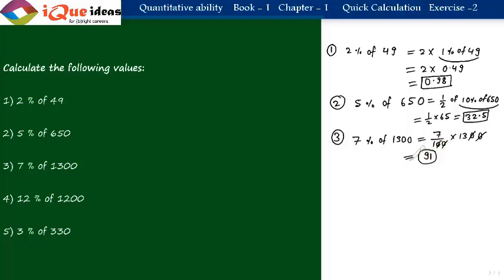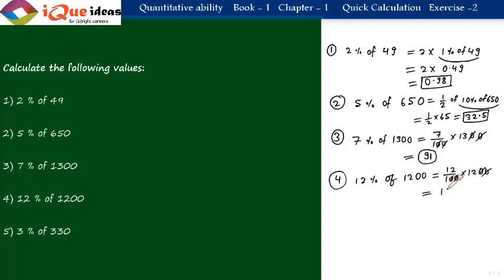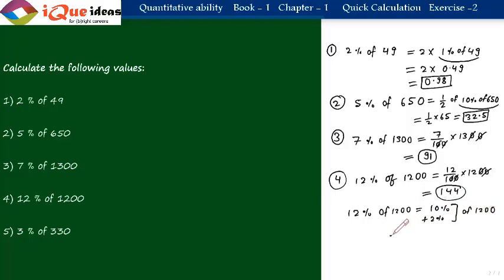Question 4: 12 percent of 1200. Using the fundamental method, 12 by 100 into 1200, the zeros cancel and we get 12 into 12, which is 144. Alternatively, we can split it as 10 percent plus 2 percent of 1200. 10 percent of 1200 is 120. 1 percent of 1200 is 12, so 2 percent is 24. Then 120 plus 24 equals 144. Two different methods give the same answer.